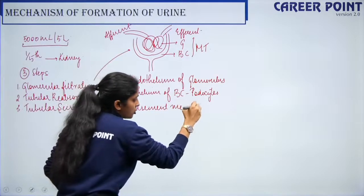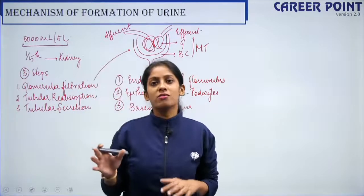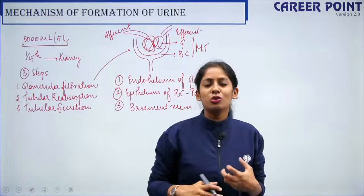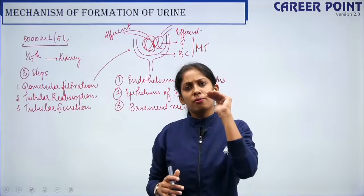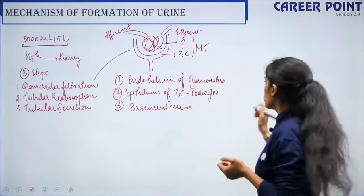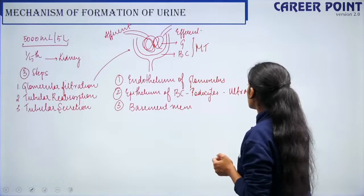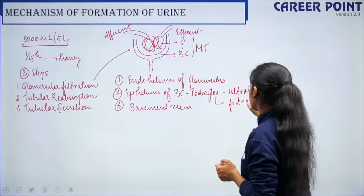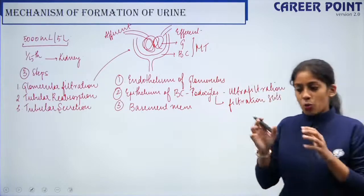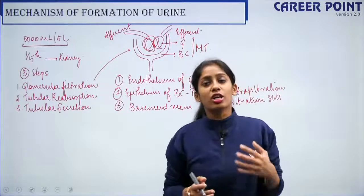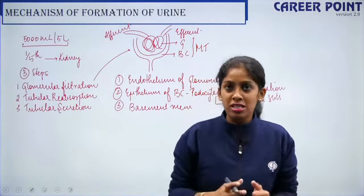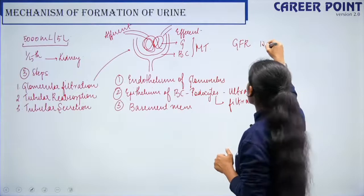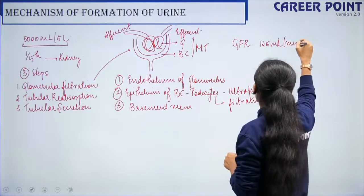Blood has two components: formed elements and plasma. The formed elements are not filtered, and even plasma proteins are not filtered out — the filtration is very accurate and precise, which is why it is called ultrafiltration. The podocytes have filtration slits at proper intervals. The filtrate that comes out is called glomerular filtrate. The volume filtered per unit time is the glomerular filtration rate (GFR), which is 125 ml per minute or 180 liters per day.